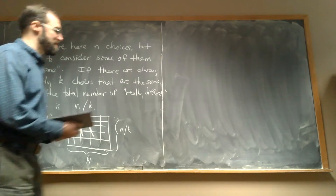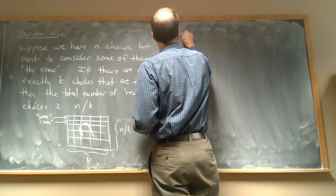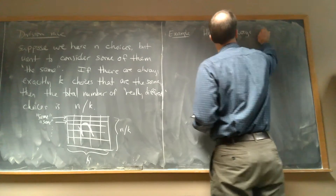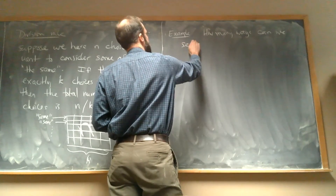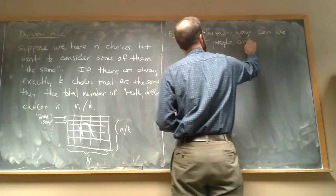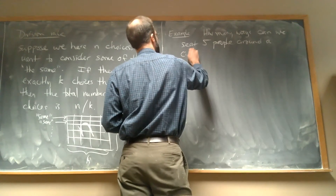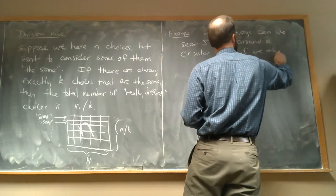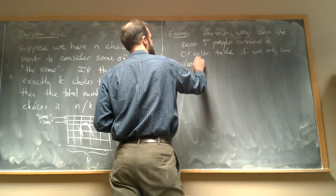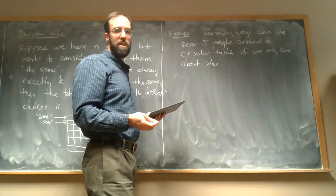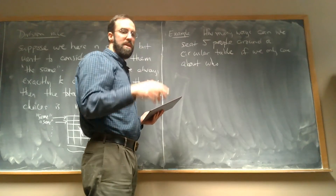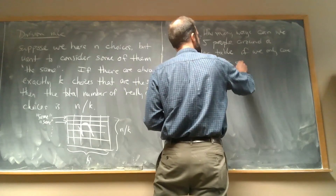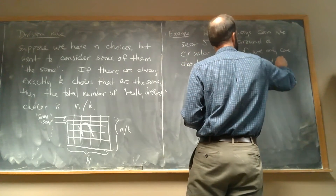Let's do an example. How many ways can we seat five people around a circular table, where we only care about who is sitting to the left and right of whom? I don't care specifically who is sitting in which numbered seat — if you've got the same person on your left and right, it doesn't matter where you're sitting.